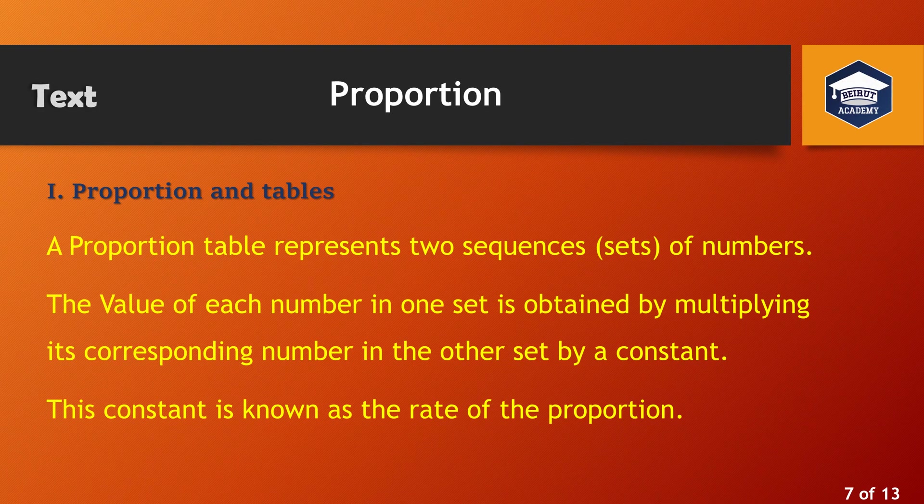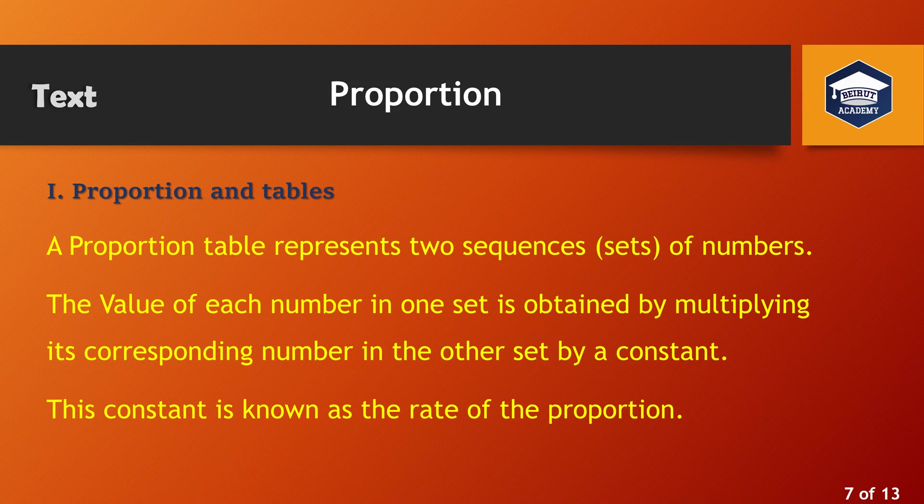As a conclusion, a proportion table represents two sequences of numbers. The value of each number in one set is obtained by multiplying its corresponding number in the other set by a constant. This constant is known as the rate of the proportion.